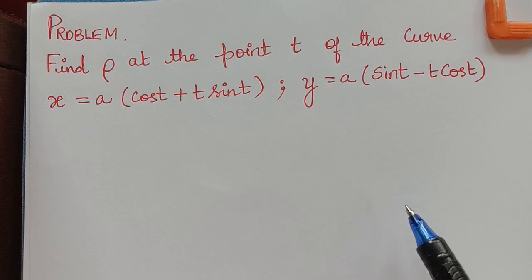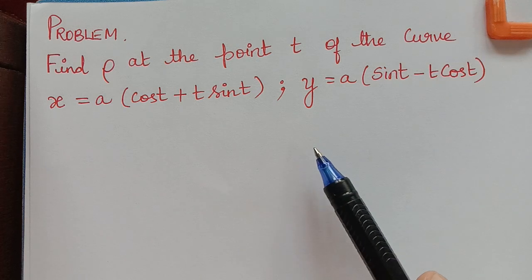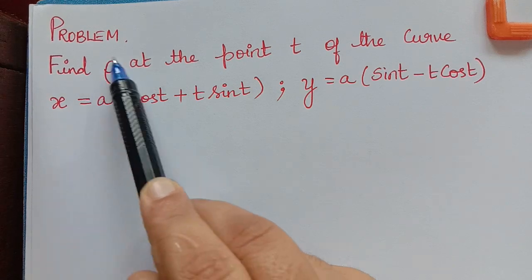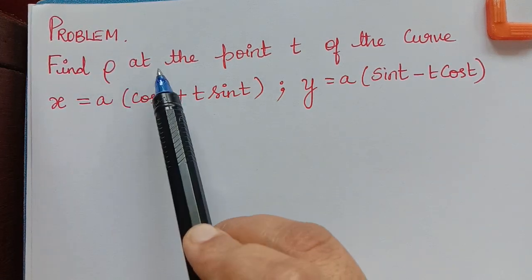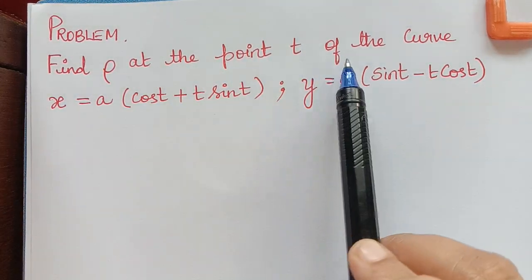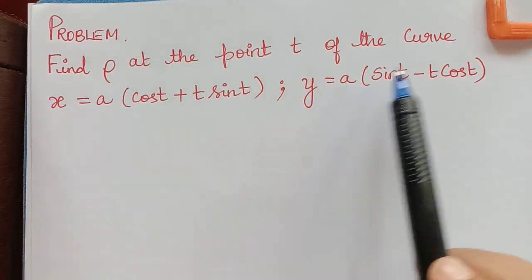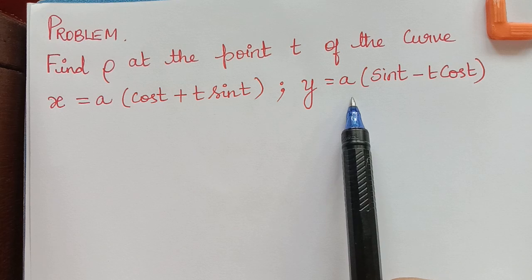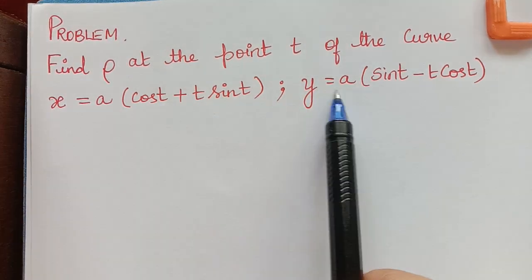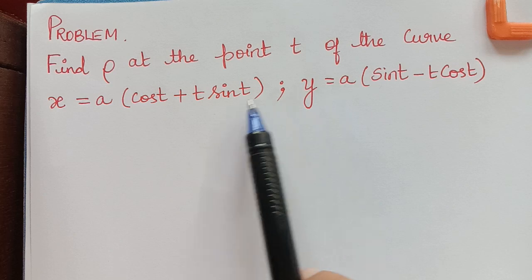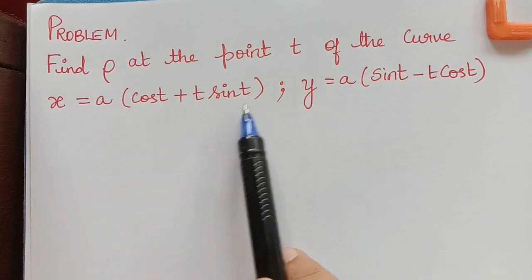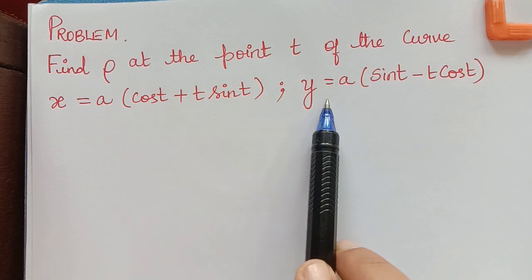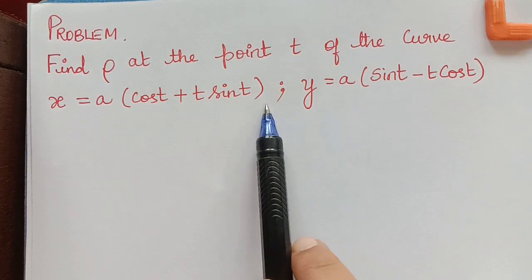Under the topic radius of curvature, we have a problem which says: find ρ (the radius of curvature) at the point t of the curve x equals a(cos t + t sin t) and y equals a(sin t - t cos t). These two equations are given in parametric form, so we have to use the method for parametric equations to find the radius of curvature.